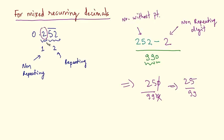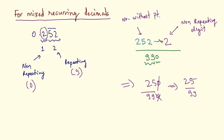Let's revise the method. First, count the number of repeating digits and non-repeating digits — here, 2 repeating and 1 non-repeating. For the denominator: write 9s for repeating digits and 0s for non-repeating digits, so 2 nines then 1 zero. For the numerator: on the left side of the minus sign write the number without the decimal point, and on the right side write the non-repeating digit. Then calculate the simple fraction.